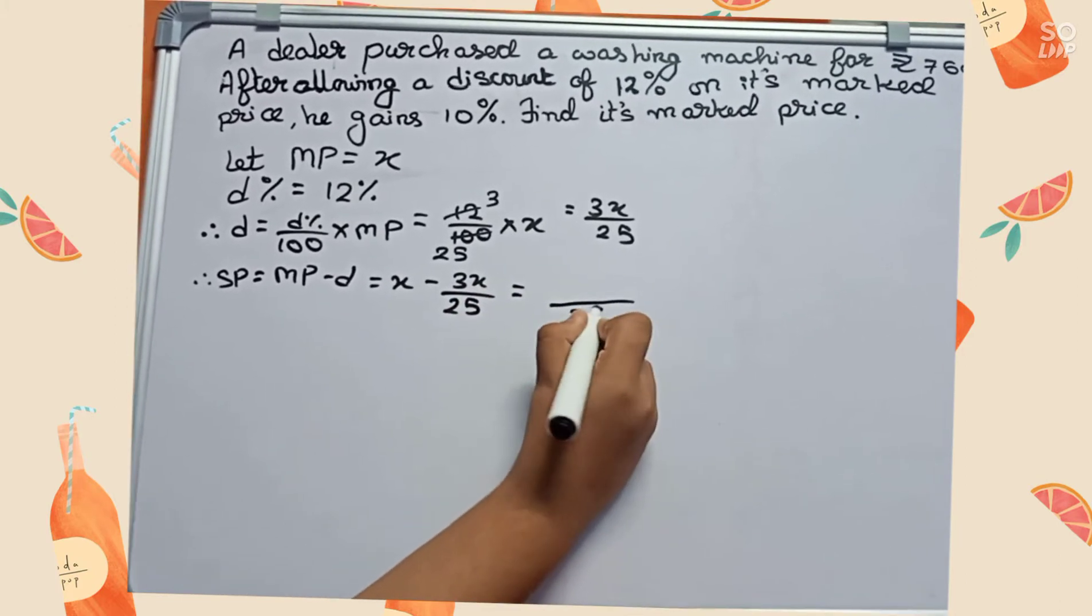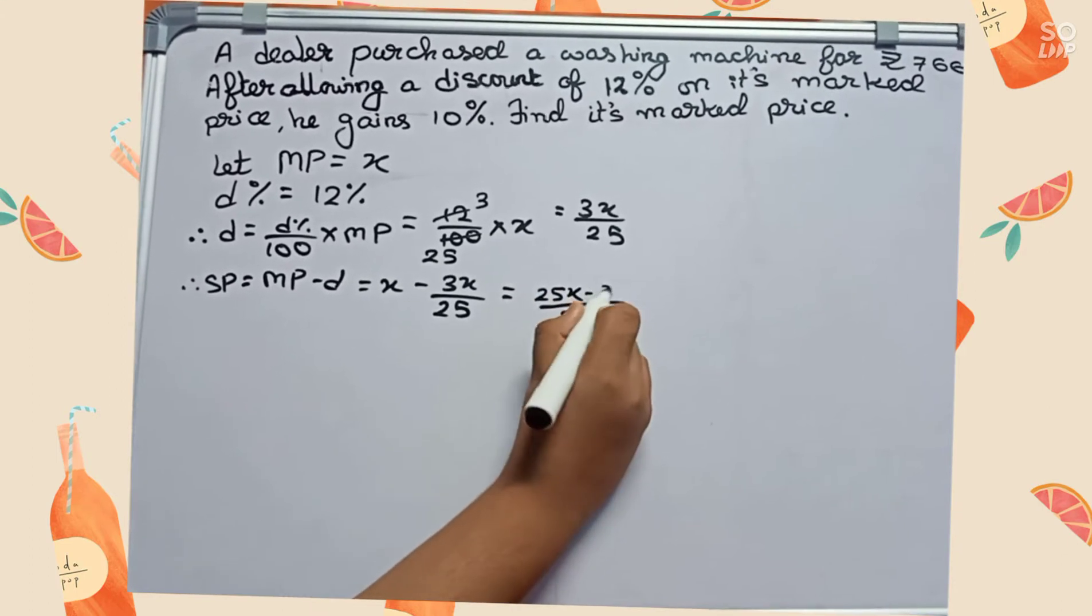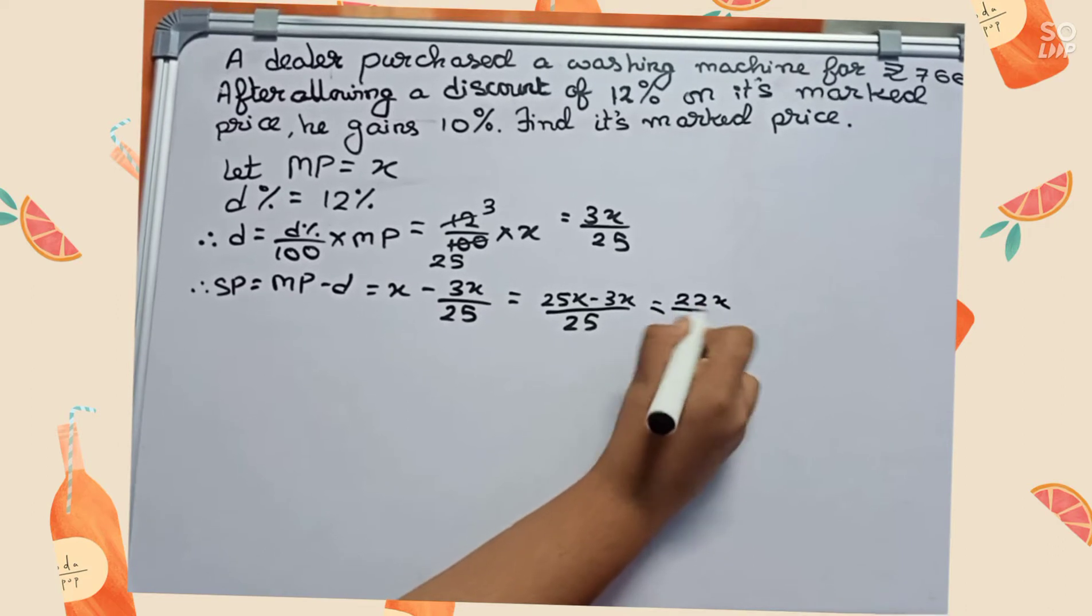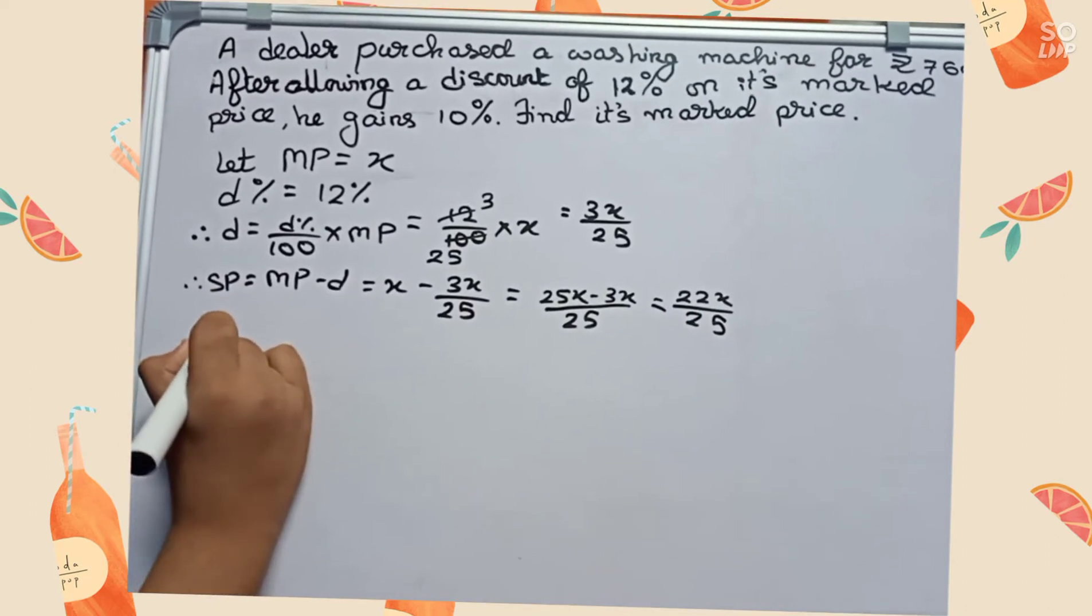Taking common denominator 25, we get 25x minus 3x equals 22x by 25. Now here it is given gain percentage equals 10%.